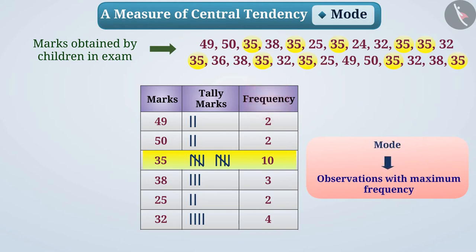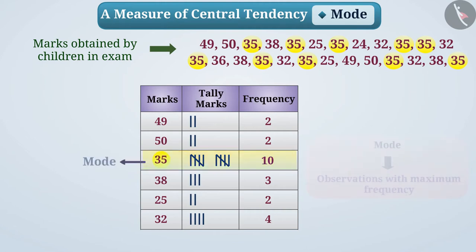As seen here, 35 has occurred the most — 10 times — so it is the mode. Mode 35 tells us that the maximum number of children scored 35 marks.